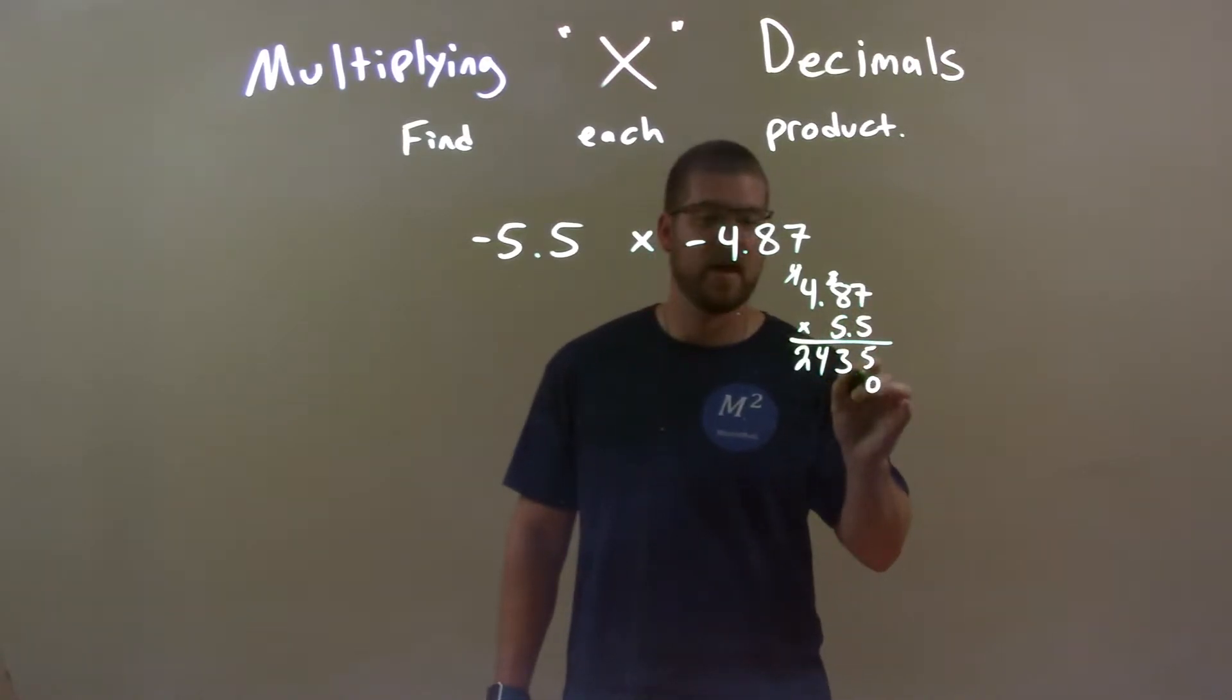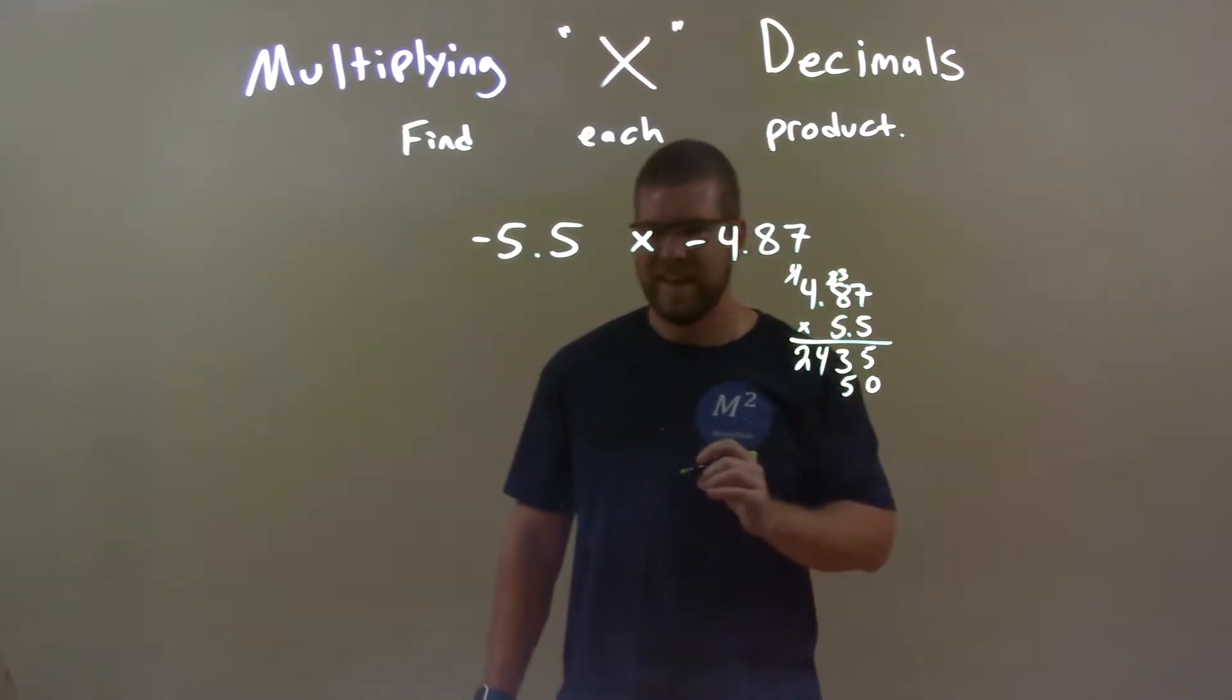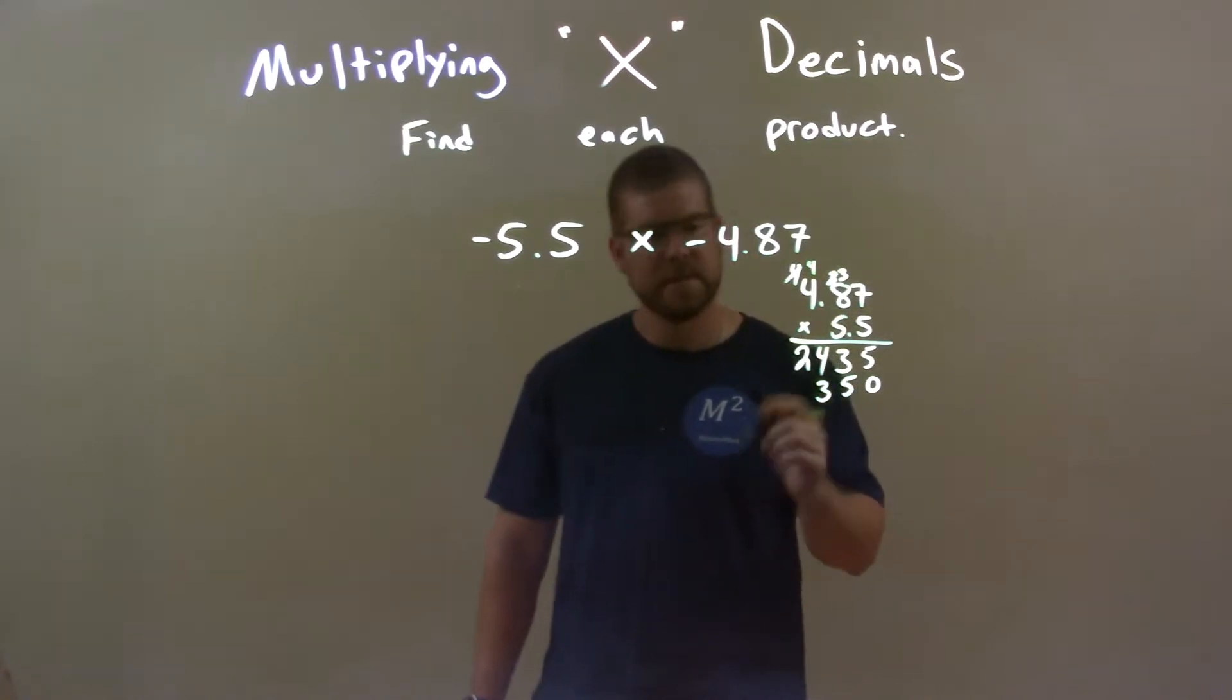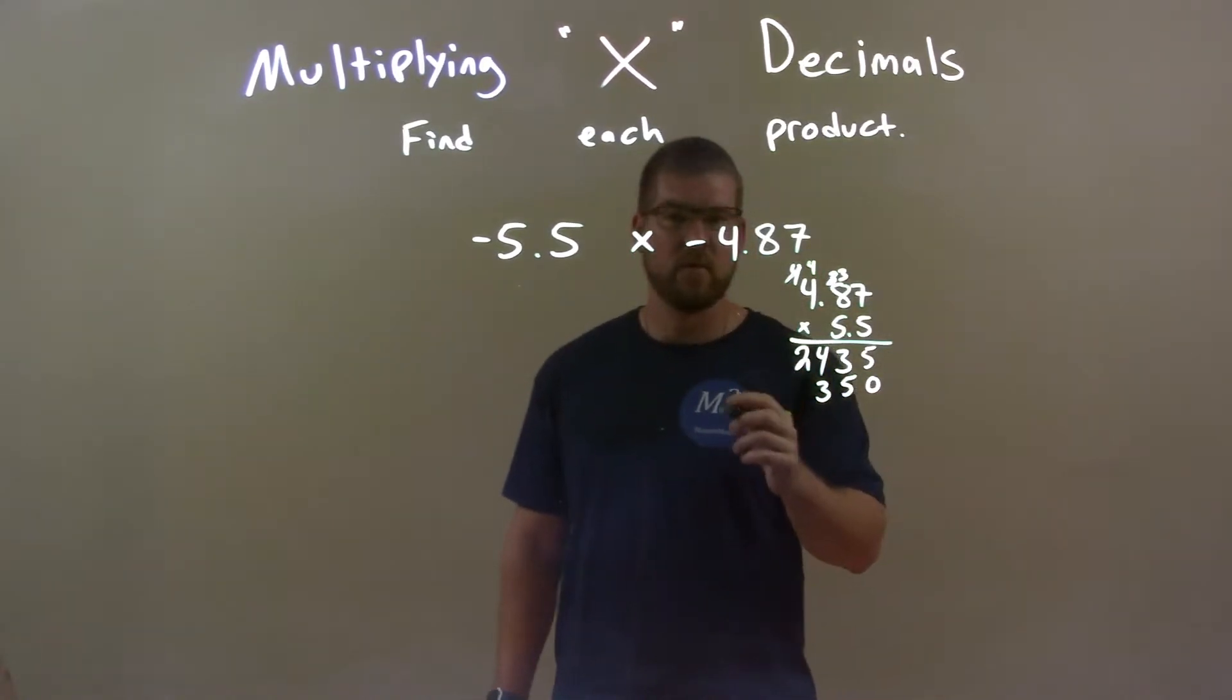5 times 7, again, is 35. 5 carry the 3. 5 times 8 is 40, plus 3 is 43. 3 carry the 4. 5 times that 4 is 20, plus another 4 is 24.